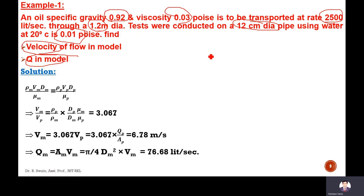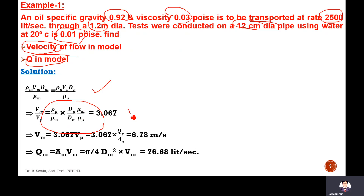Since viscosity is given and viscous force is important, we apply Reynolds model law. Reynolds number of prototype equals Reynolds number of model: rho*V*D/mu must be equal for both. From this equation, the velocity ratio Vm/Vp equals (rho_p/rho_m) times (Dp/Dm) times (mu_m/mu_p). With diameter, viscosity, and density given for both model and prototype, the velocity ratio and hence the model velocity can be determined.